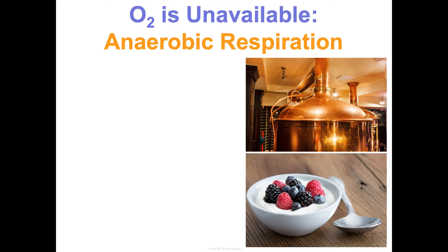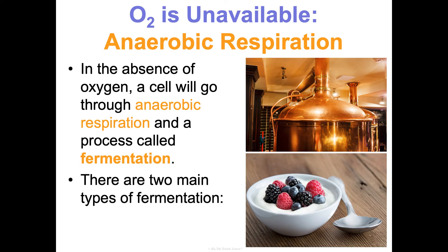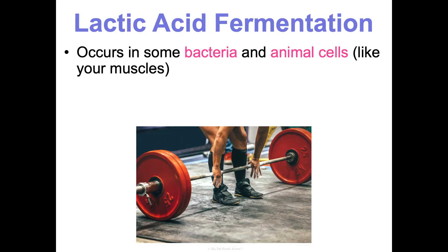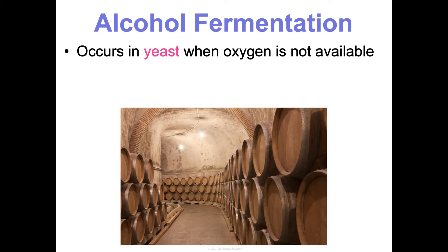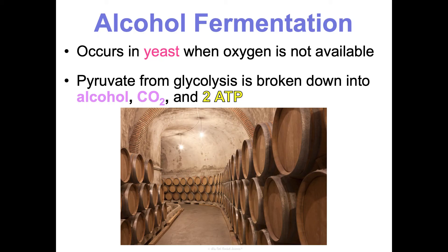Let's circle back to fermentation. After the pre-stage of glycolysis, if the cell doesn't have enough oxygen to move on to aerobic respiration but still needs ATP, it's going to do anaerobic respiration or fermentation. There are two types: lactic acid fermentation and alcohol fermentation. Lactic acid fermentation occurs in some bacteria and animal cells like yours. The pyruvates from glycolysis are converted into lactic acid, and we get two ATP from this process. Alcohol fermentation happens in yeast when oxygen isn't available — the pyruvates break down into alcohol, carbon dioxide, and two ATP.